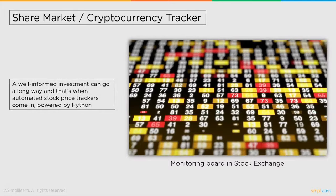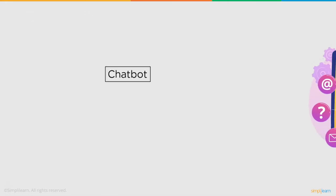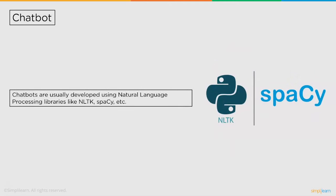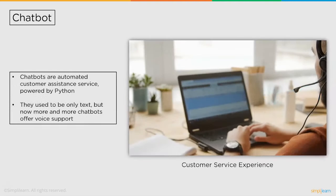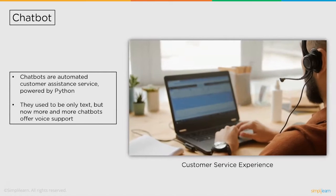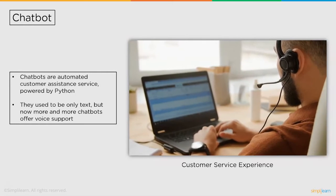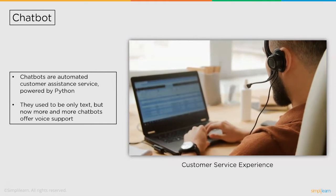Followed by share market and cryptocurrency trackers, we have chatbots. Chatbots are in high demand and that's why it is an amazing area for implementing Python automation techniques. Chatbots are becoming increasingly common especially in business and e-commerce fields, aiming to provide superior customer service experience to buyers. Chatbots are usually developed using natural language processing libraries like NLTK, SpaCy, etc. These libraries can take in hundreds of thousands of sentences and then create a new sentence as a response to a question. Chatbots used to be only text-based, but now more and more chatbots offer voice support with the advancements of NLTK, and these libraries are completely based on Python.